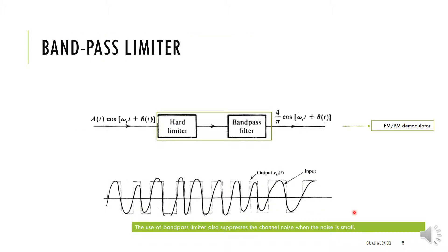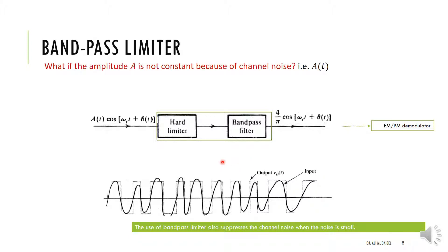There is one practical problem: before differentiation, the received signal may not have exactly constant amplitude. If we have A as a function of time — A(t)·cos(ωct + θ(t)) — whether FM or PM, differentiating the product of two functions gives us additional terms via the product rule. To avoid this amplitude variation complicating the result, we need a special device before demodulation.